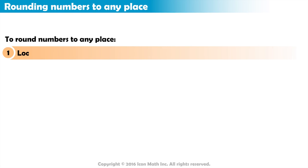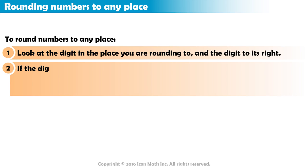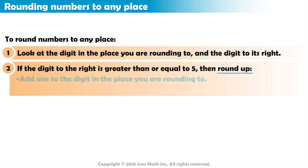To do that, we look at the digit in the place we are rounding to, and the digit to its right. If the digit to the right is greater than or equal to 5, we round up the digit in the place we are rounding to, by adding 1 to it, and change all the digits to its right to zeros.